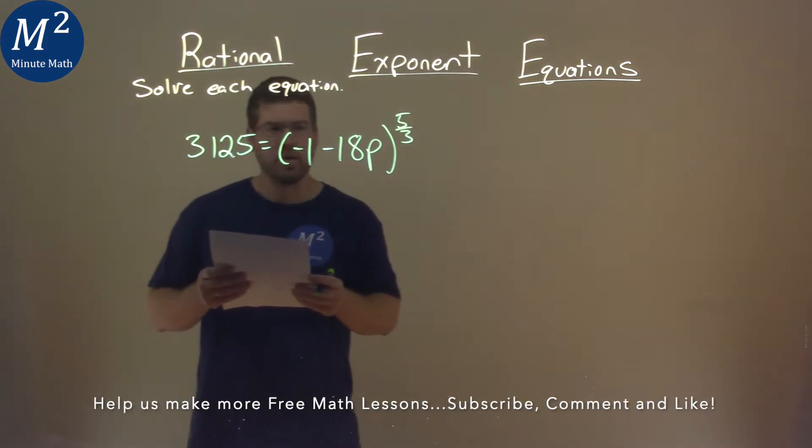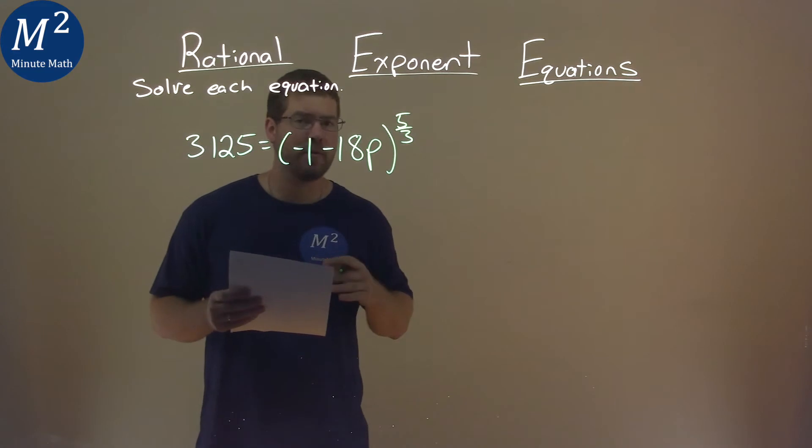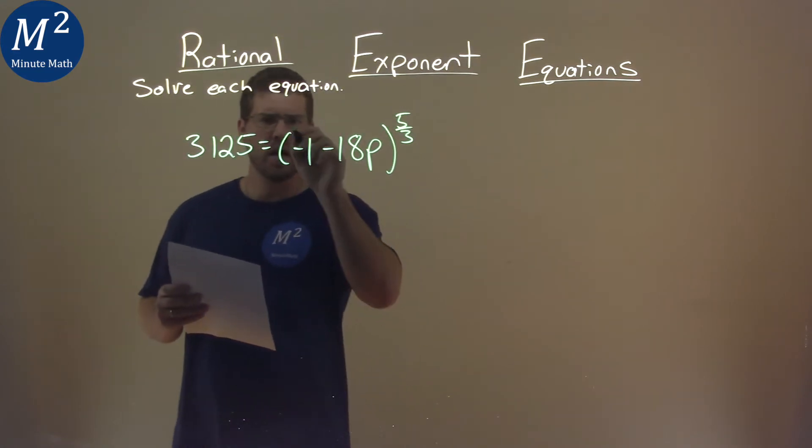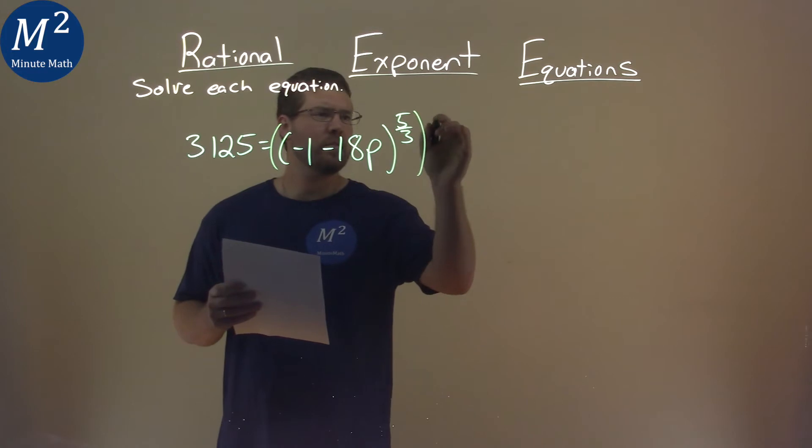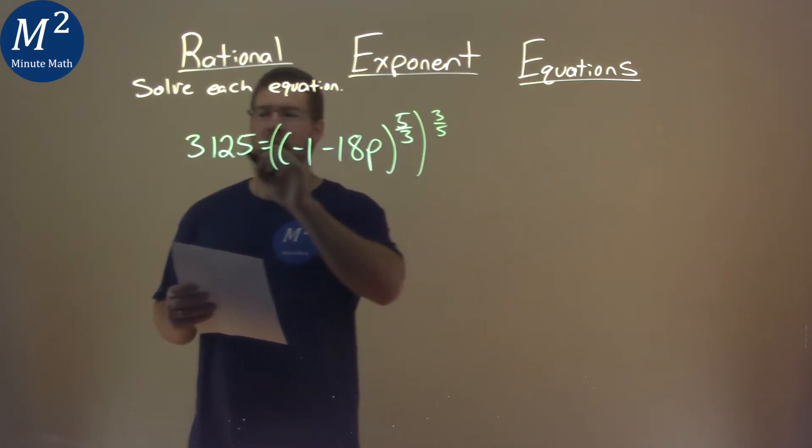What I want to do first here is I have a five-thirds power, and I need to get rid of that exponent. So, I'm going to raise both sides to the three-fifths power and make sure it's to both sides.